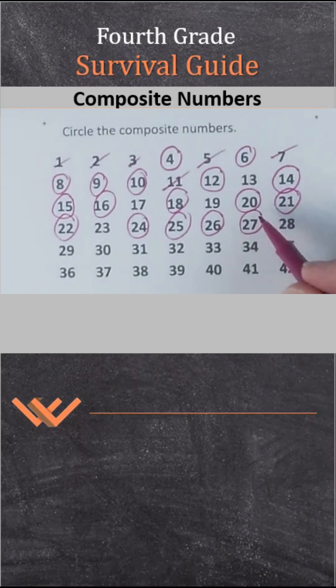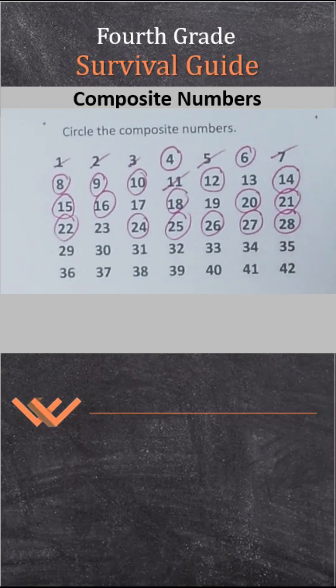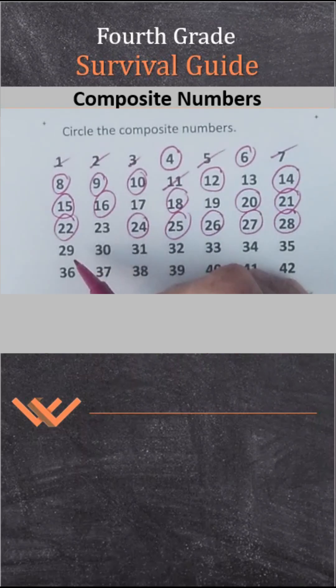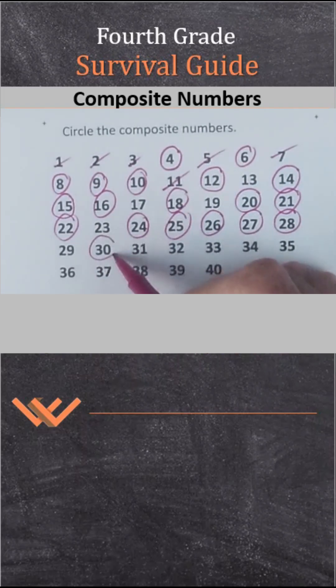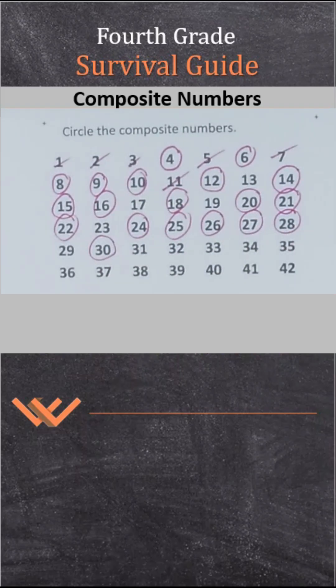27 — 3 times 9. 28 — 4 times 7. 29 is prime. 30 — 6 times 5.